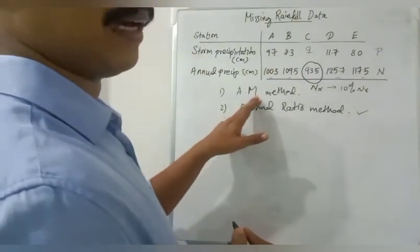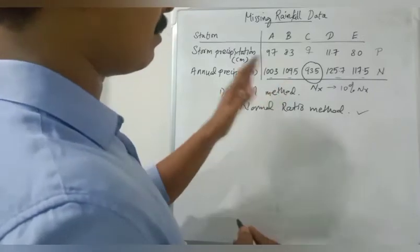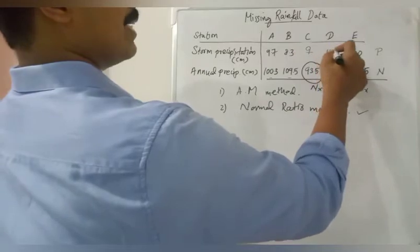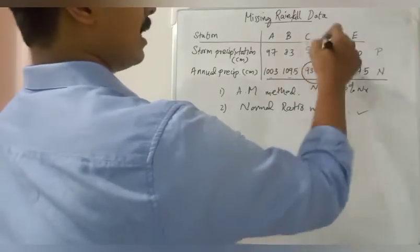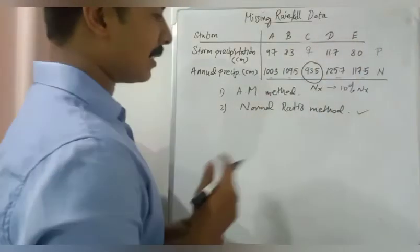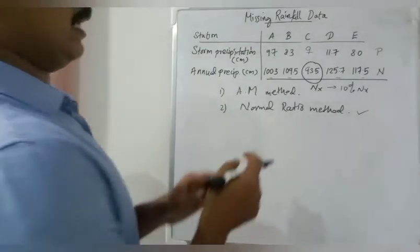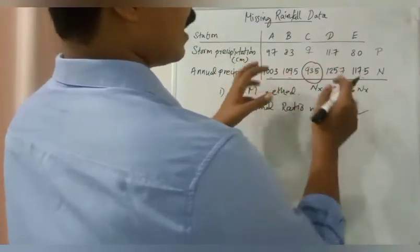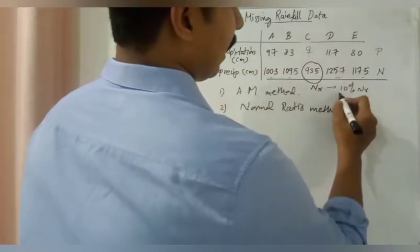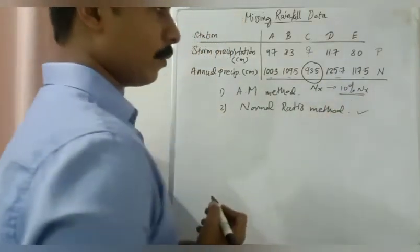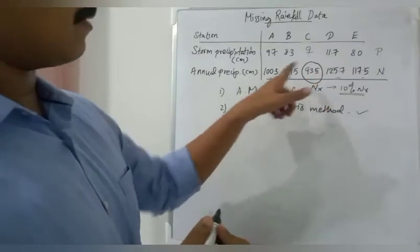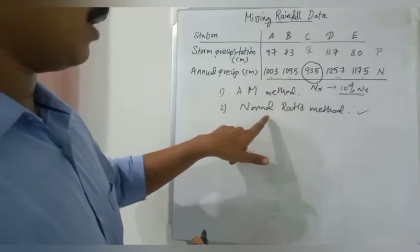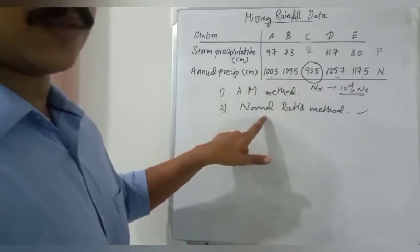Or else you can adopt arithmetic mean method. Arithmetic mean method is just taking the average: 9.7 plus 8.3 plus 11.7 plus 8 divided by 4. That is if all the other values are not exceeding 10 percentage of Nx value. If these values are exceeding 10 percentage more than 93.5, you have to take normal ratio method.